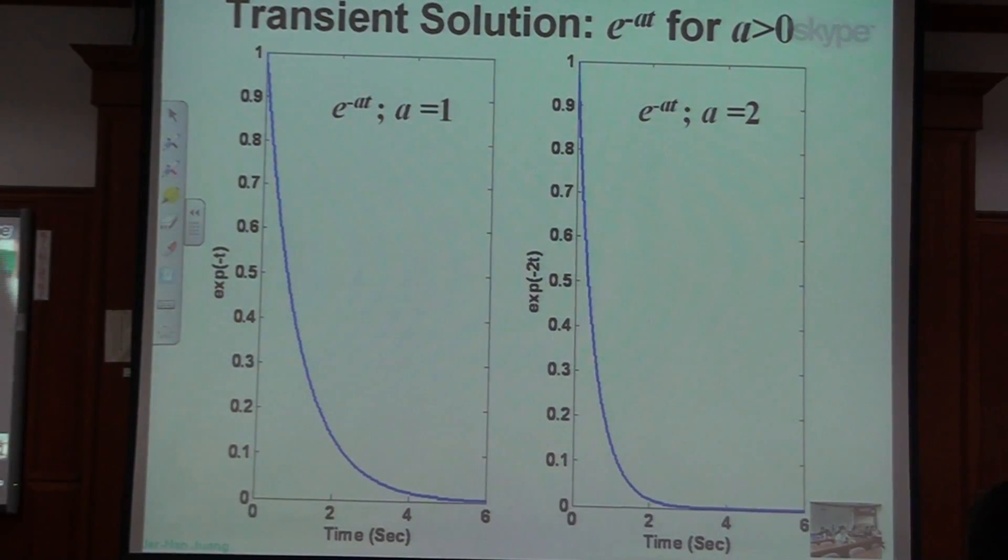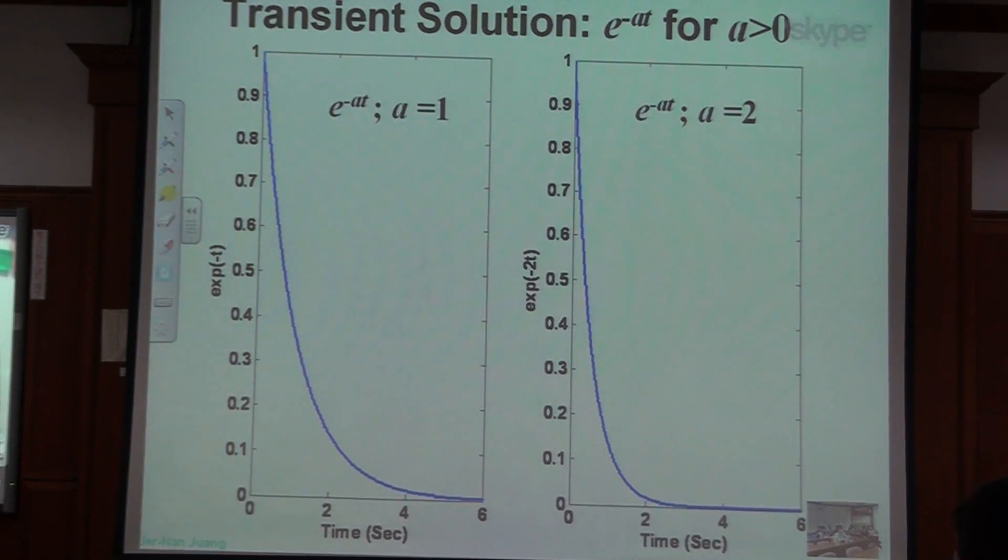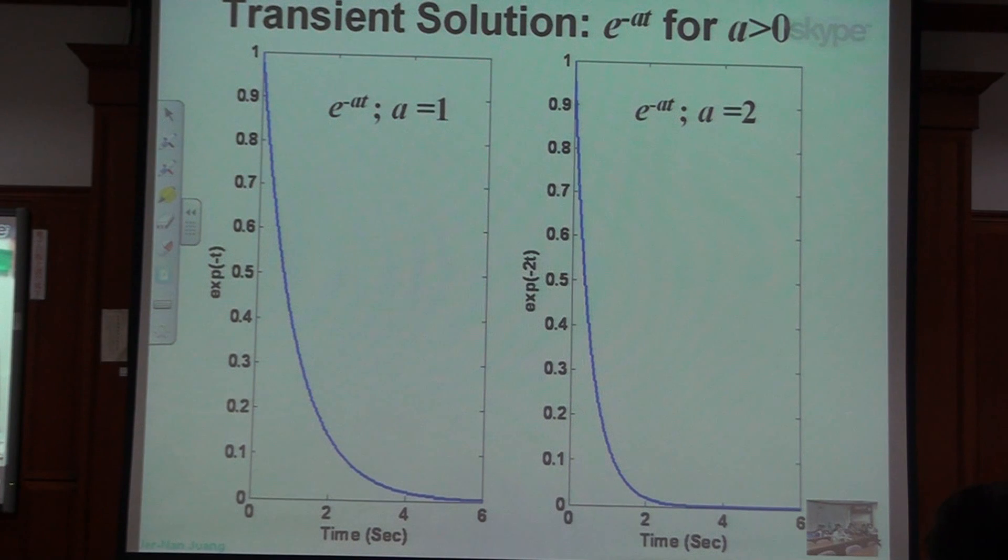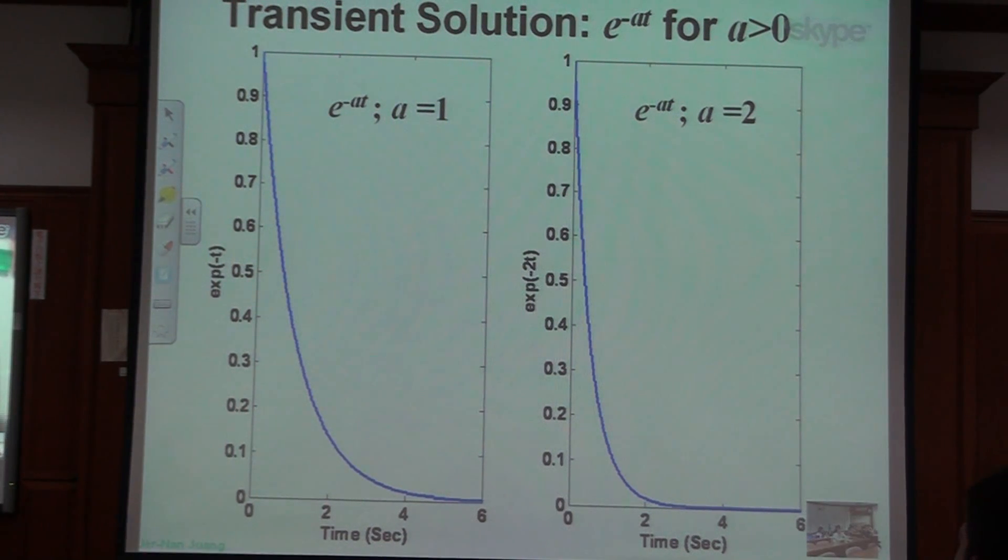All right, okay. So in real system, the same thing. Earthquake may not come, but because this building has initial conditions for the building, then the building still will be shaking. Doesn't matter if you have input or not. Assume A larger than 0.